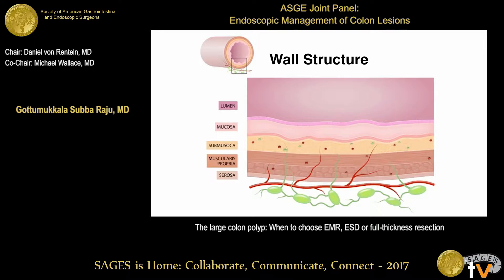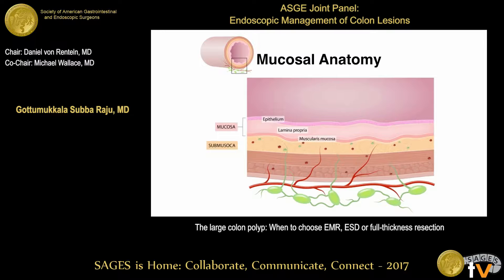Let me take you through some of the basics, because when you're trying to resect, it's important to understand the anatomy of the colon wall. The most important thing is, in the mucosa, you have epithelium, lamina propria, and muscularis mucosa. Muscularis mucosa divides the mucosa and separates it from the submucosa. Colon is a little bit different from other organs in that the lymphatics are more prevalent in the deeper parts of the submucosa.